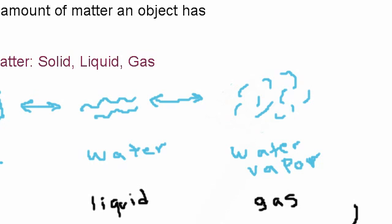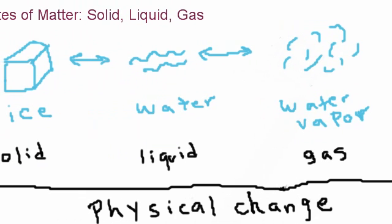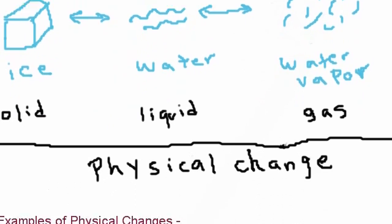These types of changes that you see when we go from the solid, the liquid, and the gas, these are examples of what you call a physical change. We call it a physical change because nothing is really changing as far as the composition of the compound. What that means is that ice is water, water is water, and water vapor is water. They are all made up of H2O, which is the molecular formula for water. It's still the same thing. That's what we mean by a physical change. They can change physically, but it's still the same compound.